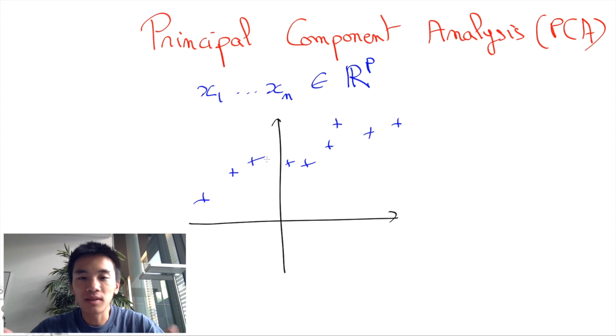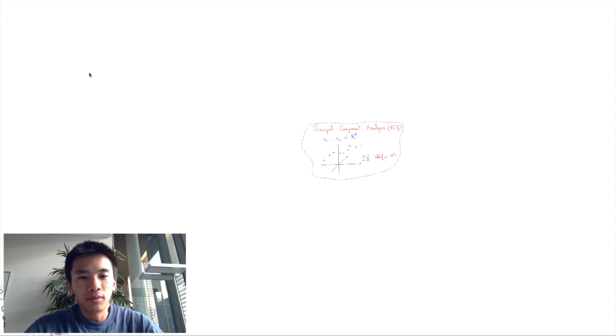This happens all the time. For instance, for typical images of the web, we have p equals to 1 million at least. This is what would happen if you consider megapixel images.